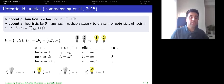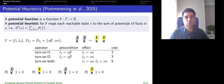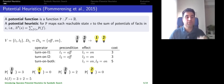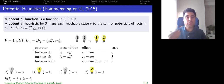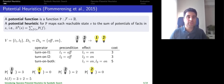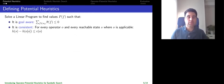To use potential heuristics we assign a potential to every fact — for example, 3 for light-one-off, 0 for light-one-on, and so on. The heuristic value of the initial state where both lights are off would be 3 plus 2, for a total of 5. We use a linear program to find potential values such that the overall heuristic is goal-aware and consistent, which implies that it is admissible.